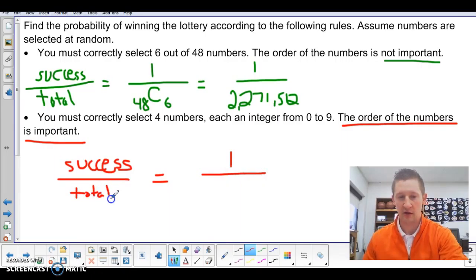Total, here, we've got, let's see, integers from 0 to 9. That means there's 10 numbers to choose from. And we are going to have 4 of them. Now, the key is that the order is important. So that means this is now a permutation instead of a combination. So 10P4, it's going to give us a few more options to worry about.